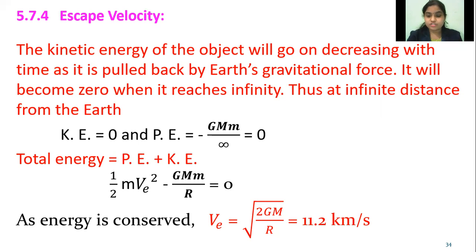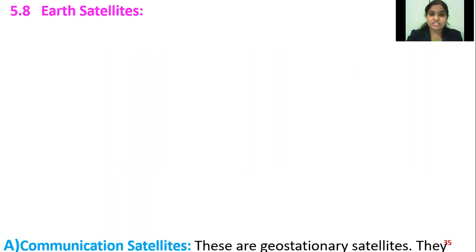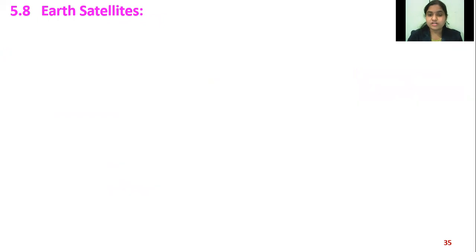Substituting the values — gravitational constant G equals 6.67 into 10 to the minus 11 Newton meter squared per kilogram squared, mass of the Earth, and radius of the Earth — the answer comes out to be 11.2 km per second. Only if a body is thrown with this velocity or more can it escape from Earth's gravitational field.